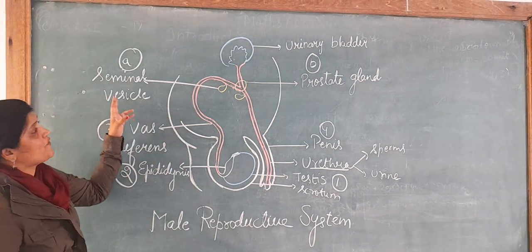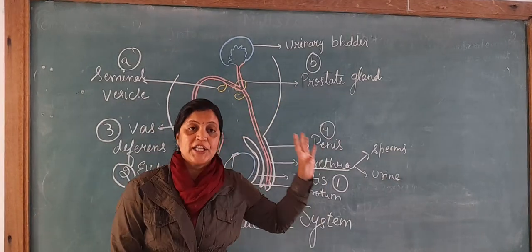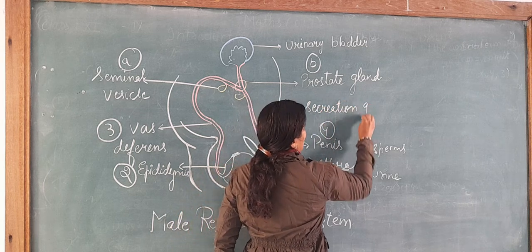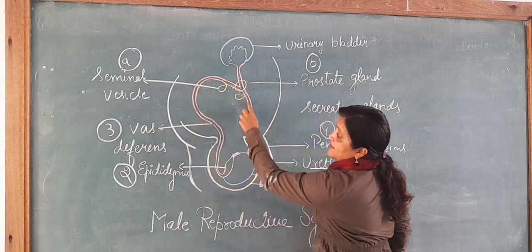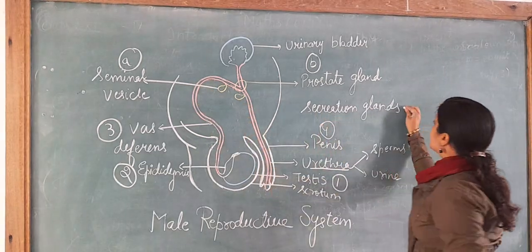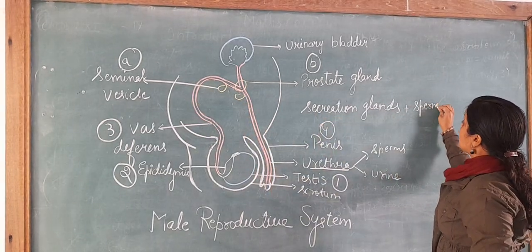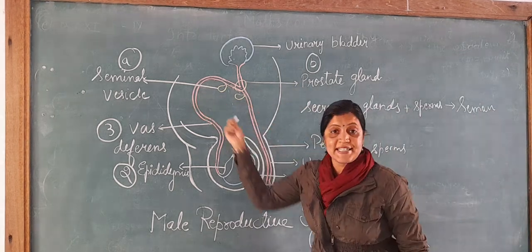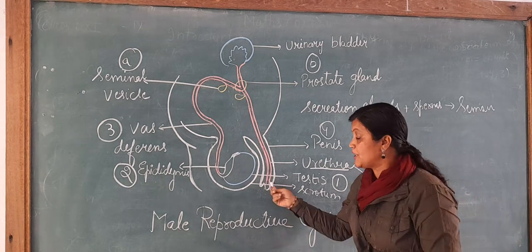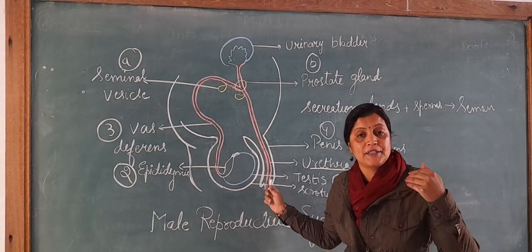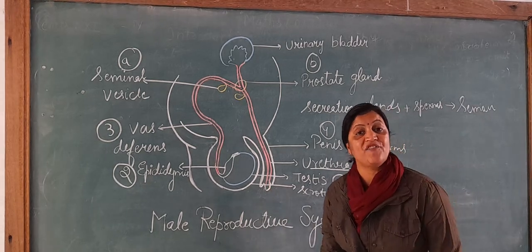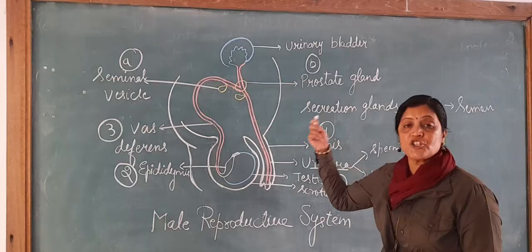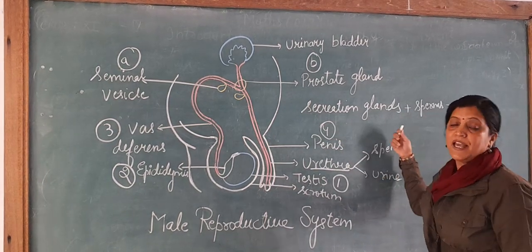The secretion of all three glands — the seminal vesicle, prostate gland, and Cowper's glands — plus the sperms coming from the testis together form what is known as semen. Through the penis, this semen is transferred into the female vagina. So semen is the mixture of secretions of all three accessory glands plus sperms.